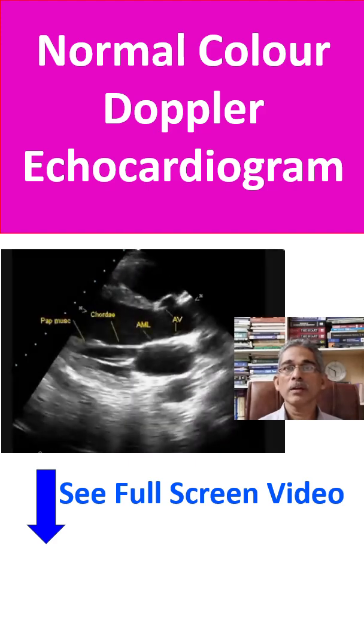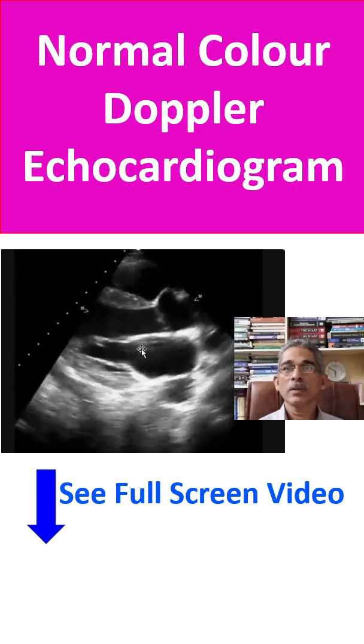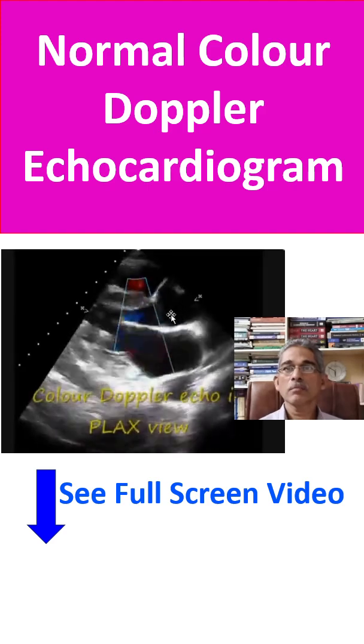Now you can see it, and here you can see the papillary muscle, chordae, anterior mitral leaflet, and you can see the aortic valve there.